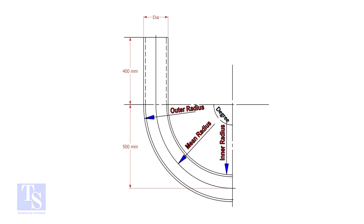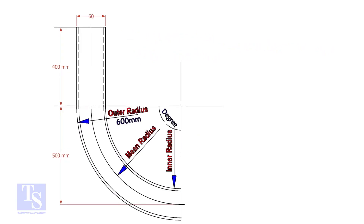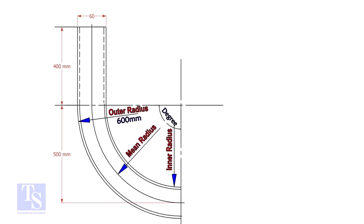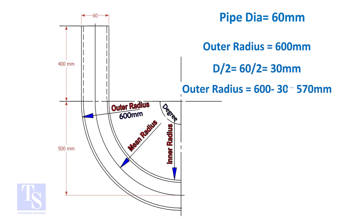Suppose the outer radius is given. Subtract the half diameter from the outer radius to get the center radius. For example, assume the diameter of the bend is 60 mm and the outer radius is 600 mm, then the mean radius is 600 minus half the diameter, which equals 570 mm.